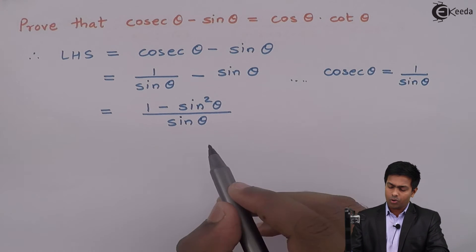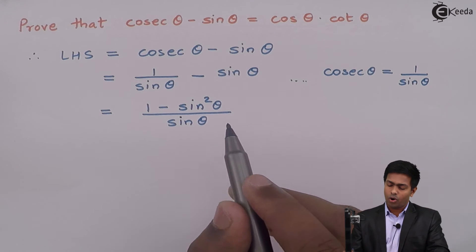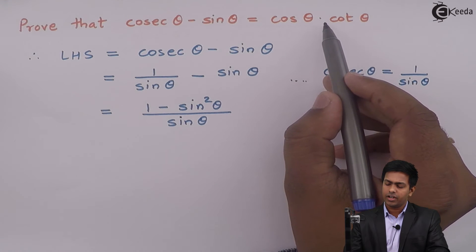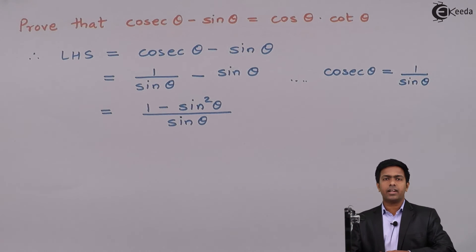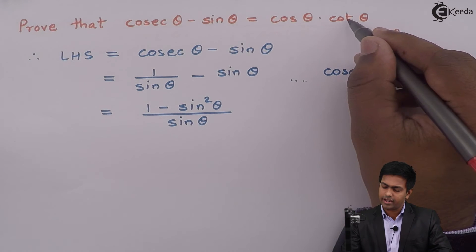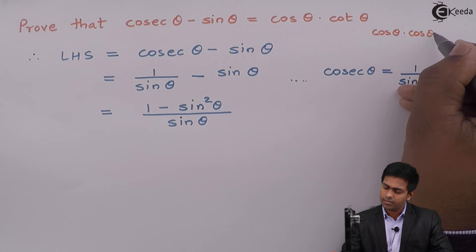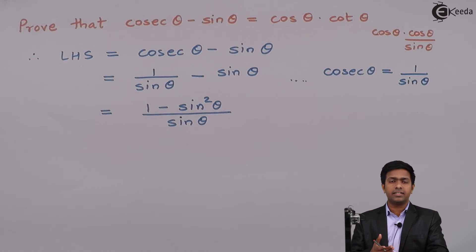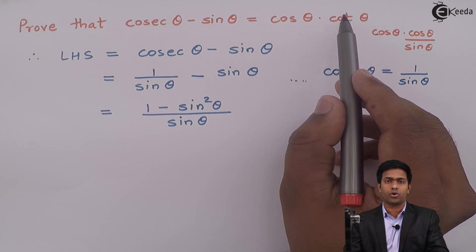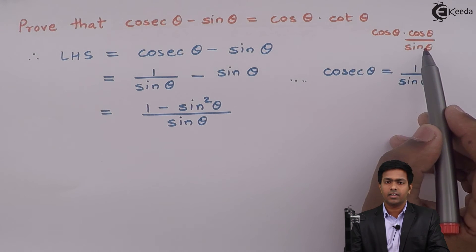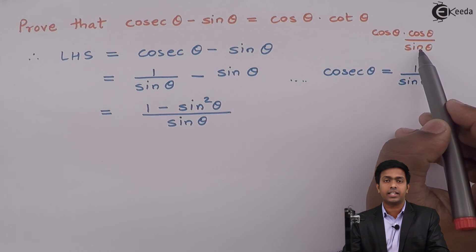Now how to solve from here? Always observe the right hand side. On the right hand side we want cos theta into cot theta. Can I say that we want cos theta into — now cot is cos upon sin. So I am also visualizing the right hand side in terms of sin and cos. On the right hand side, if I convert everything into sin and cos, I should get cos theta into cos theta by sin theta, which means cos square theta upon sin theta.